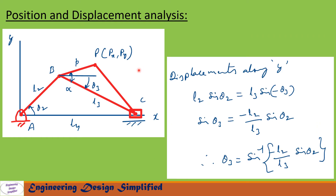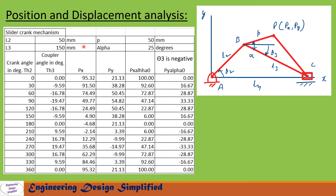Now let us see how to find theta3. Writing the displacement along y: l2·sin(theta2) equals l3·sin(minus theta3), where theta3 is considered negative because it is clockwise. We get sin(theta3) equals minus l2/l3·sin(theta2), and after simplifying, theta3 equals sin⁻¹(minus l2/l3·sin(theta2)). We will substitute this theta3 into the equations derived in the previous slides.